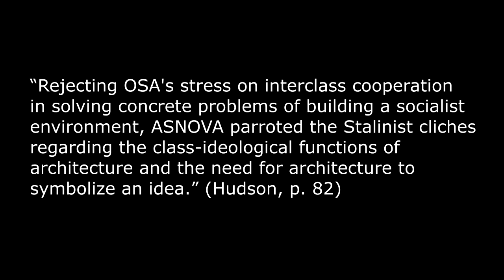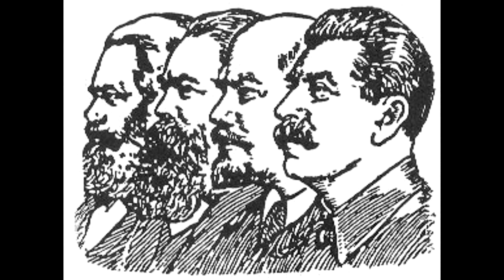It is completely dishonest for Hudson to call ASNOVA's views so-called Stalinist clichés on class ideological functions of architecture, because ASNOVA actually advocated theories of non-class, class-neutral — in reality bourgeois — aesthetics. The only sense in which ASNOVA understood class conflict was metaphysical and Bogdanovist. They believed that class conflict means the destroying of all tradition, that each new ruling class simply destroys the past instead of critically assimilating, reworking, and developing it.